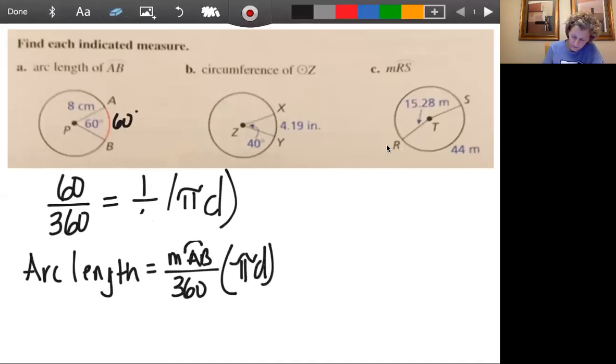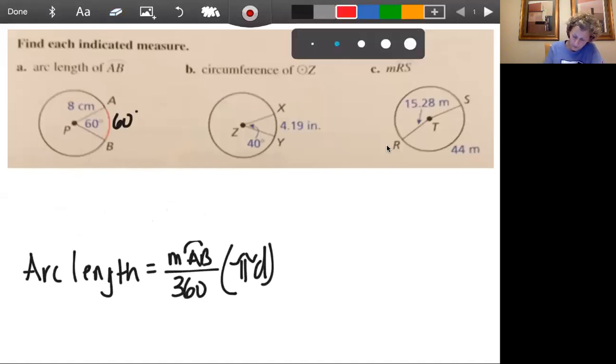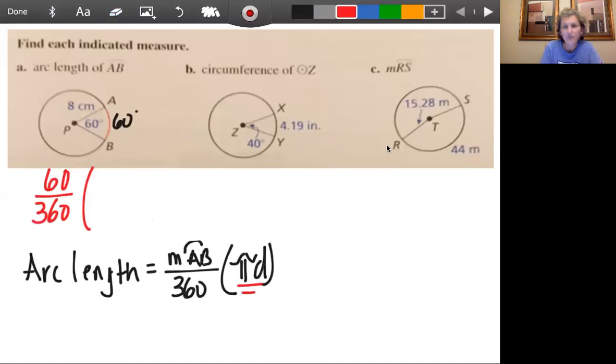Okay? So let's erase this up here and then fill it in exactly for this example. So in other words, what we're doing is 60 out of 360 times pi D. Now in this particular example, the radius is eight. So the diameter is 16. So circumference would be 16 pi. And that's what we simplify.